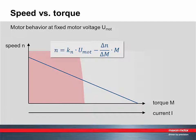The speed equals speed constant KN times the applied motor voltage minus delta N over delta M, which is called speed torque gradient, times the torque M.